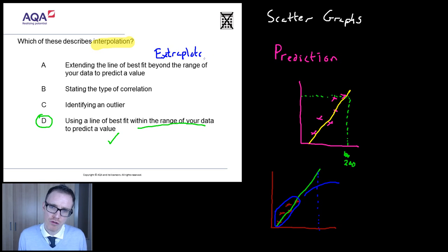Extrapolating. So, that is when you're extending the line of best fit beyond the range of your data. So it's not interpolation. It's extrapolation.